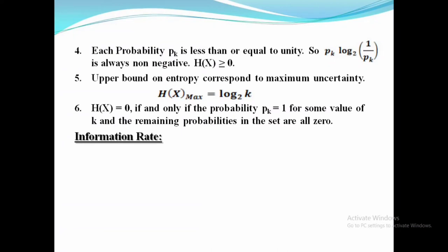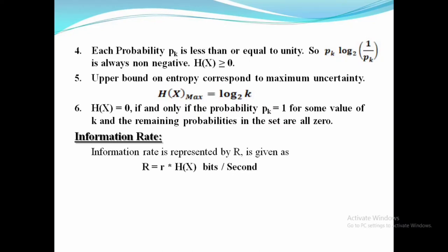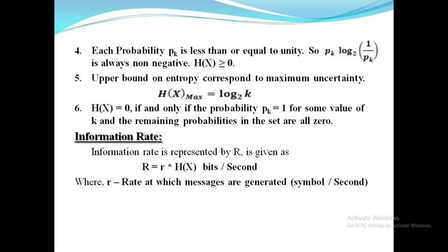Information rate is the product of the rate at which messages are generated and the average information (entropy). The capital R represents the information rate, with units of bits per second.